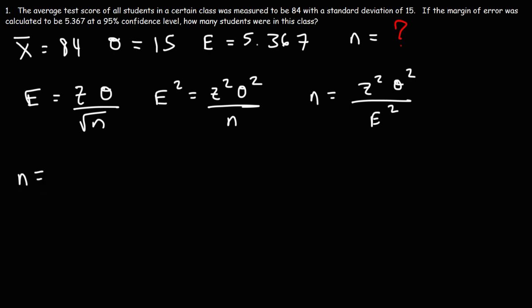So what is z? For 95% confidence level z is 1.96. For those of you who need a review on how to calculate z from a certain confidence level I'll be posting a few links in the description section below. So feel free to take a look at that if you want more videos on statistics and other similar content.